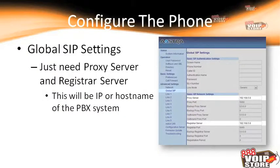The first thing to configure is the Global SIP Settings. This is where we put in our proxy server and registrar server — these are going to be the same value, and it can be the IP address or the host name of the PBX system.